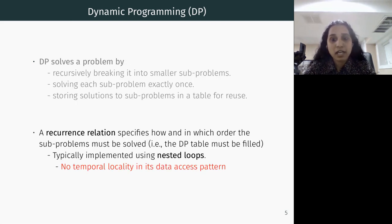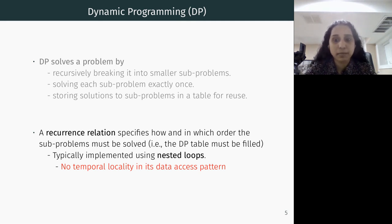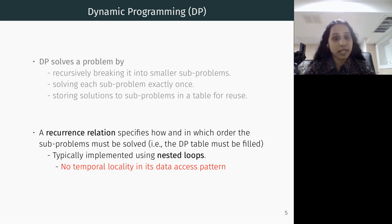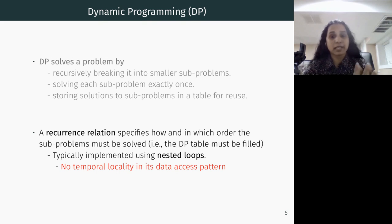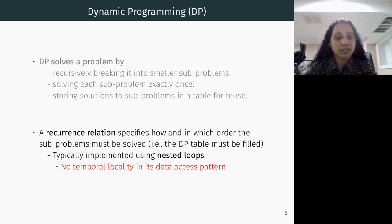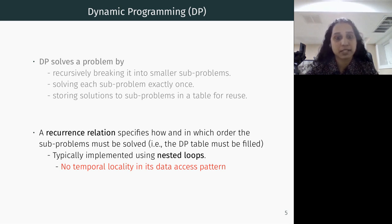Every dynamic programming solution has a recurrence relation that specifies how and which subproblems we have to solve. Typically, these algorithms are implemented using nested for loops. Prior research has shown that loop-based approaches have very good spatial locality and prefetching often improves performance, however they do not have good temporal locality in the data access pattern. Temporal locality means reusing data within a short amount of time, while spatial locality means accessing data elements that are close in storage space.